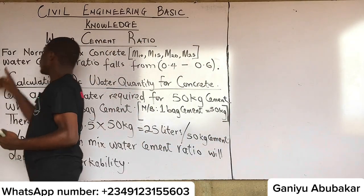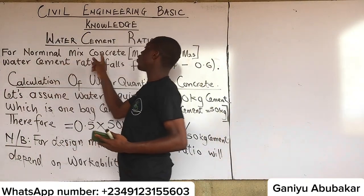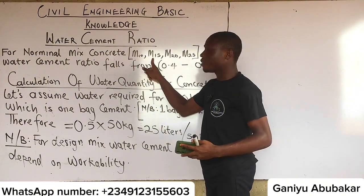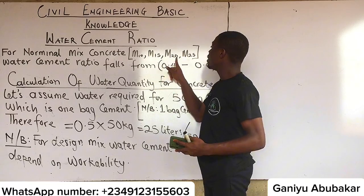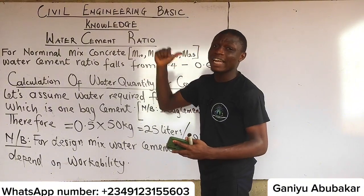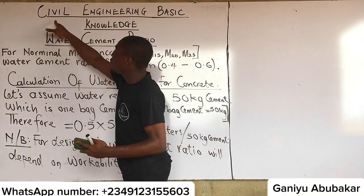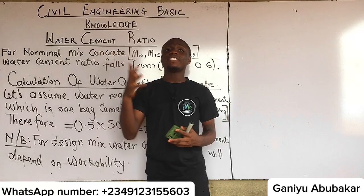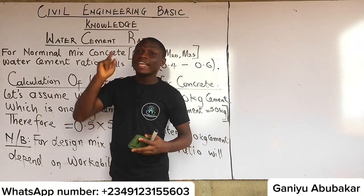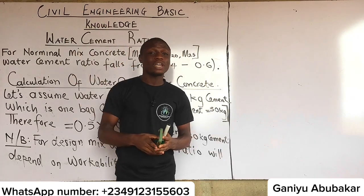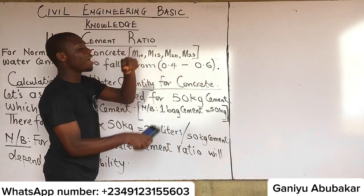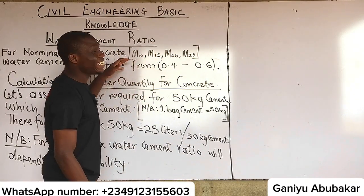It is very important to note that for nominal mix concrete, we have mix ratios: M10, M15, M20, and M25. I have explained the concept behind grades of concrete in our last class — Civil Engineering Basic Knowledge Part One — where I discussed grades of concrete, starting from Grade 10 (1:2:3 ratio) through M15, M20, M25, and M35.